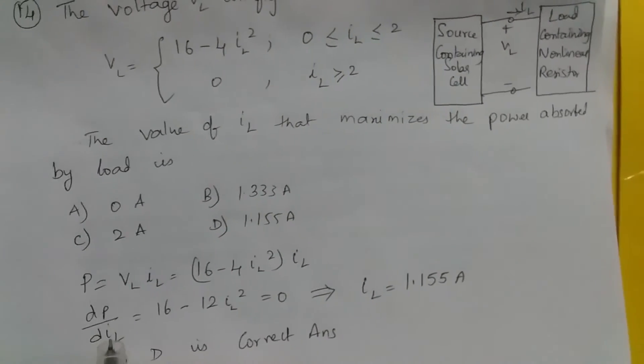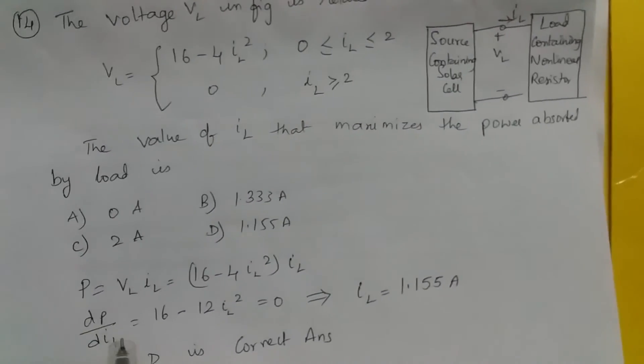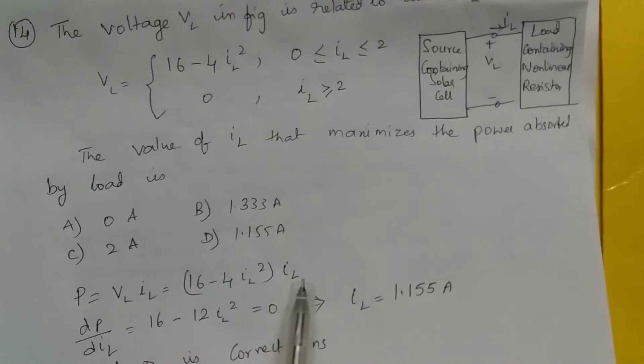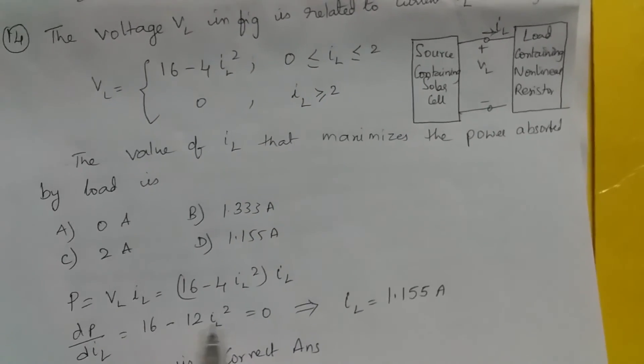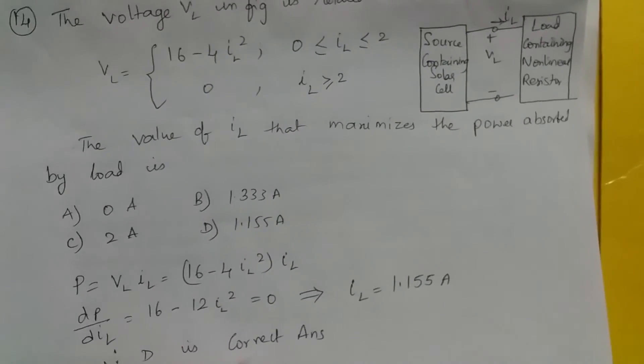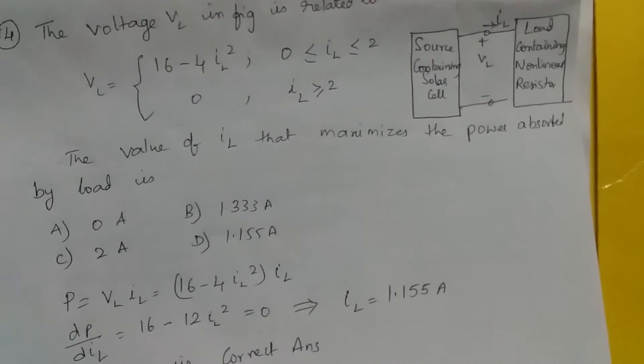Do the differentiation with respect to IL. dP by dIL equals: if you differentiate this with respect to IL, you get 16 minus 12IL squared. So IL equals 1.155 amps. So D is the correct answer.